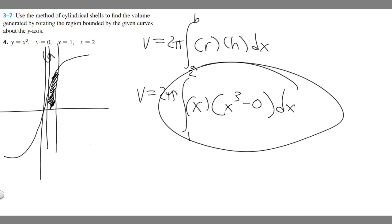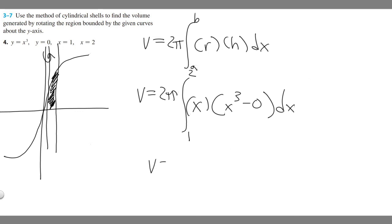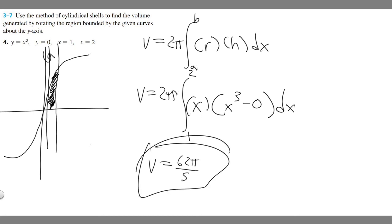This right here is your integral set up for solving this problem. The volume is going to be 62π over 5, so that's your answer. That's how you set up this integral for this problem and hopefully you found it useful.